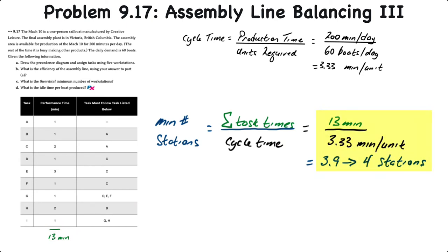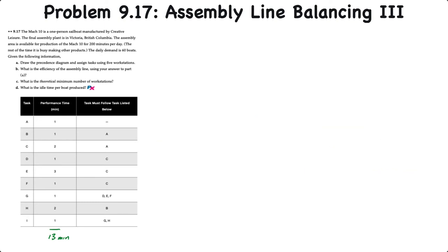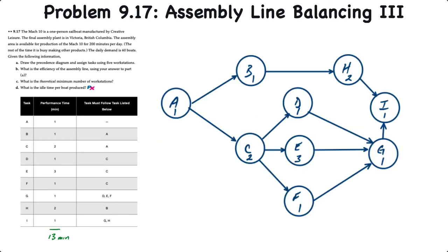Now we'll go ahead and balance the line. Before balancing the line, of course, we have to draw it. Your completed precedence diagram should look something like this. You can stop the video and trace the precedence relationships through the precedence map to make sure you understand how it's all working.